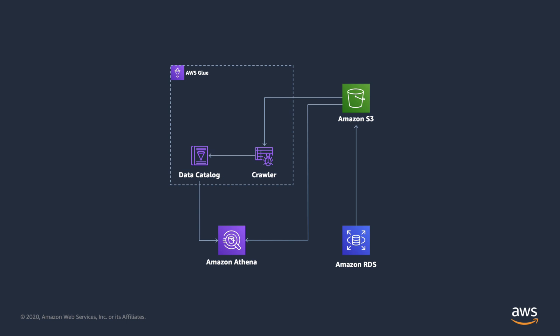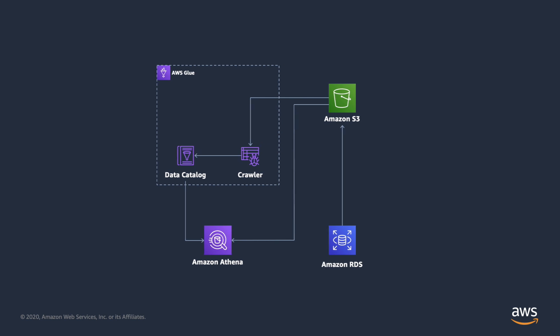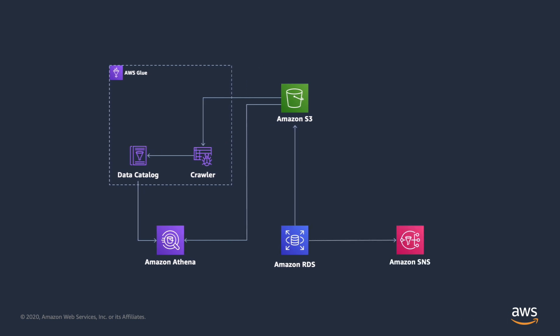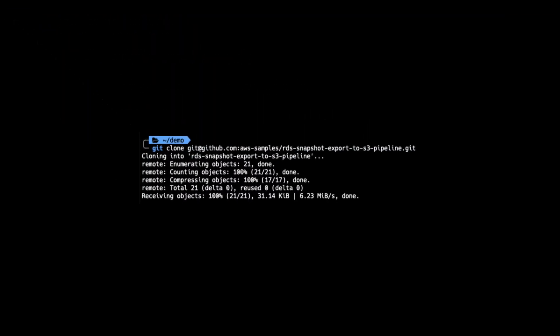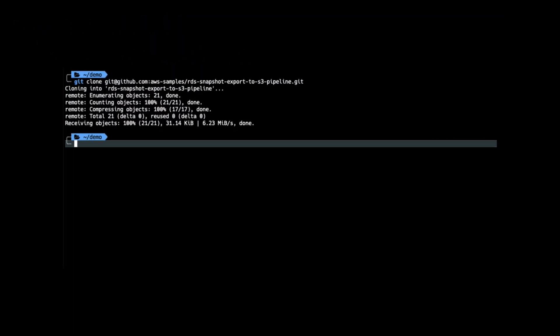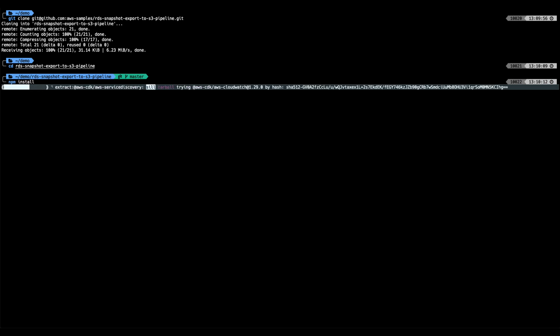That's all great, but we don't want to have to be exporting RDS snapshots to S3 manually every time. Let's automate this. Amazon RDS uses the Amazon Simple Notification Service, SNS, to publish notifications when certain RDS events occur. These notifications can trigger an AWS Lambda function to start a snapshot export, and we can then use an AWS Glue crawler to make the snapshot data available for querying with Amazon Athena.